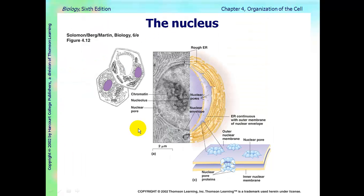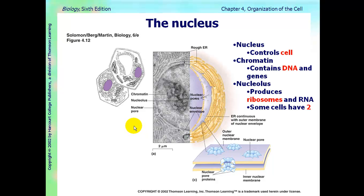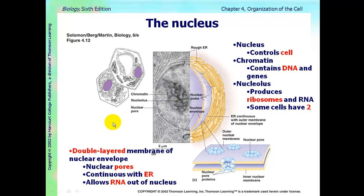The first organelle we're going to talk about is the nucleus. The nucleus controls the cell. It contains chromatin, which contains the DNA and the genes. Inside there's also a nucleolus, and the nucleolus makes ribosomes and RNA. Some cells have two nucleoluses. The nucleus is surrounded by a nuclear membrane which has pores in it, and the pores allow RNA to come out. This nuclear envelope is double-layered with a double membrane and nuclear pores, and it is connected to the endoplasmic reticulum.